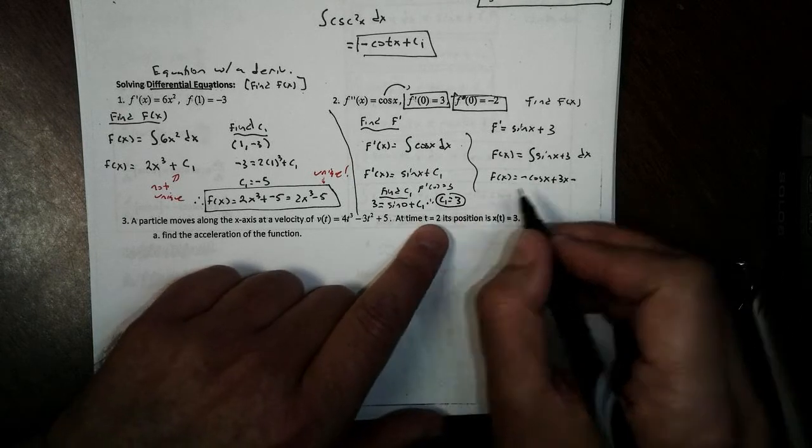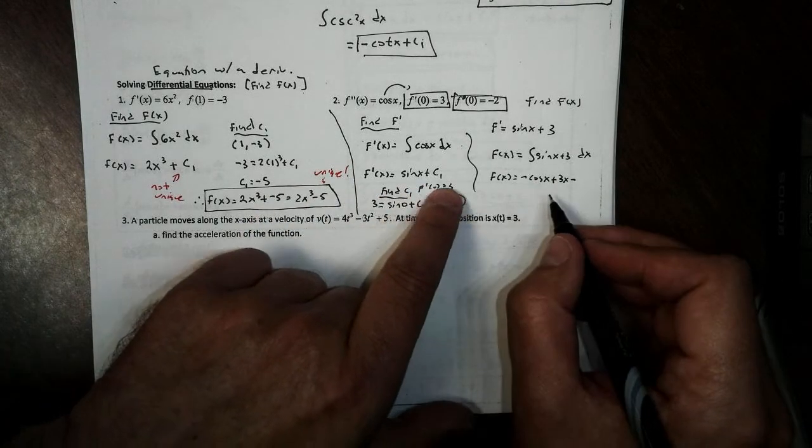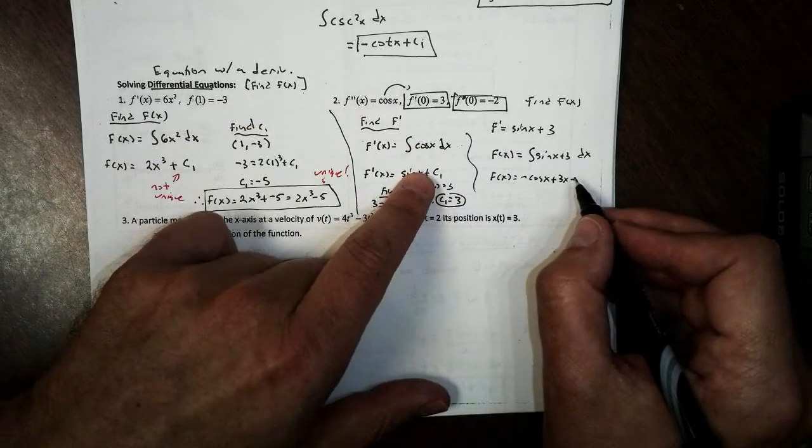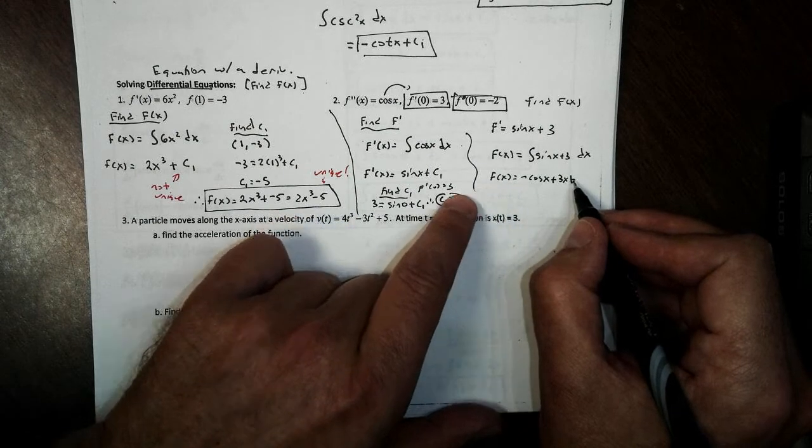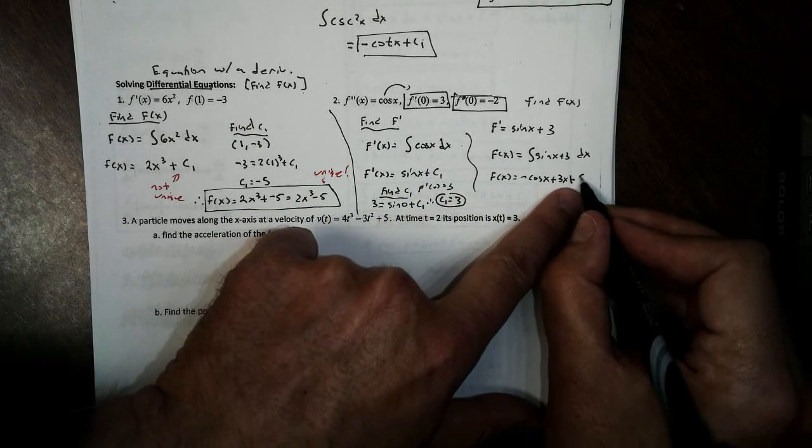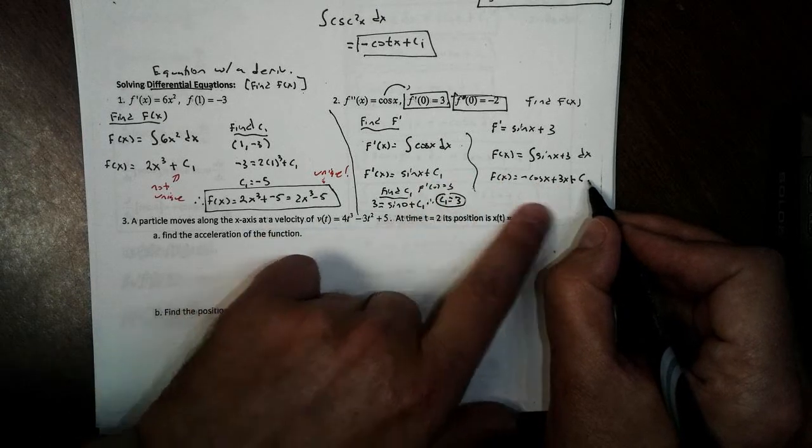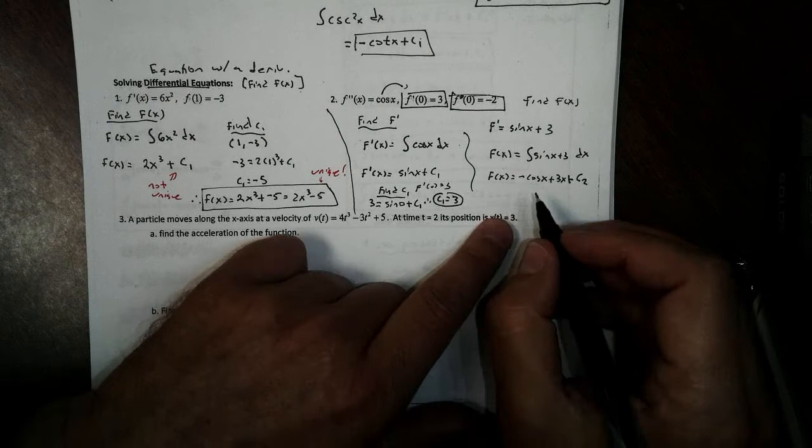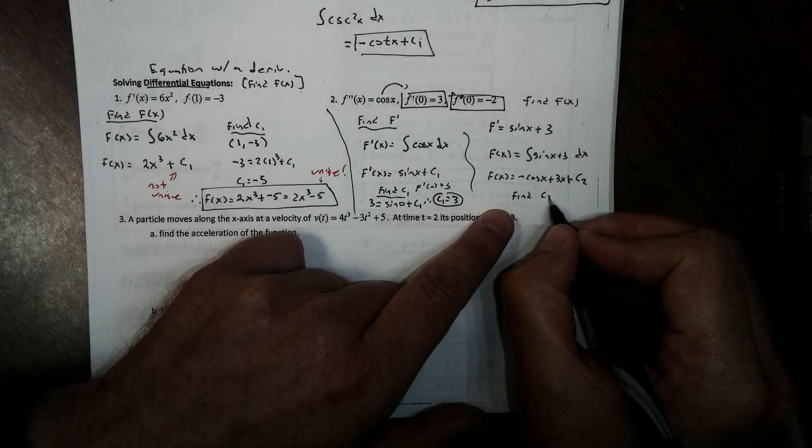Now, remember how here we kept putting plus c1s? Well, this c1 stands for this is a unique constant. I am going to have another constant. These aren't the same ones. I'm not going to put a plus c1 here. I'm going to put plus c2. c2 says this is a different constant. So now we have to find c2.